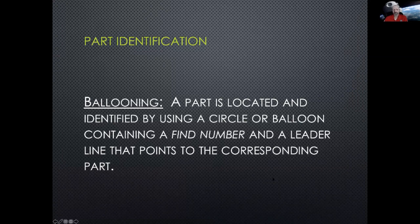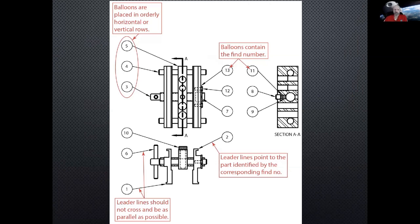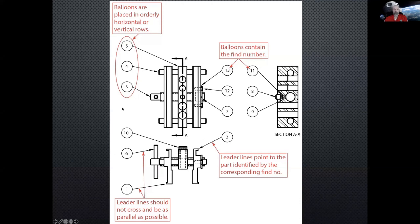Ballooning consists of a circle or balloon, a locator or find number, and a leader line. Here's another example with more complexity — all the balloons are organized either vertically or horizontally, with an easy-to-read font inside. The leader lines point directly to the parts. You want to place the balloon and leader line so they point to the part directly — you wouldn't put a number on one side and then have the leader line cross everything to reach a part on the opposite side.